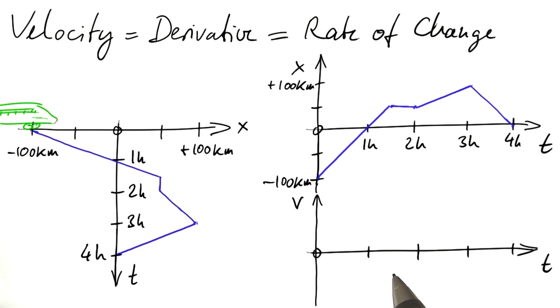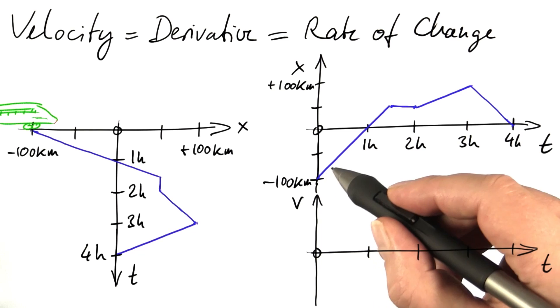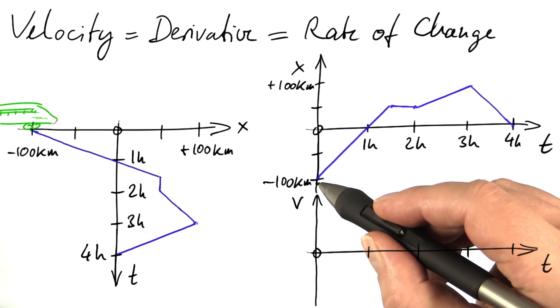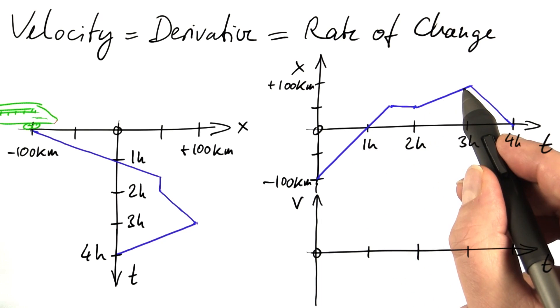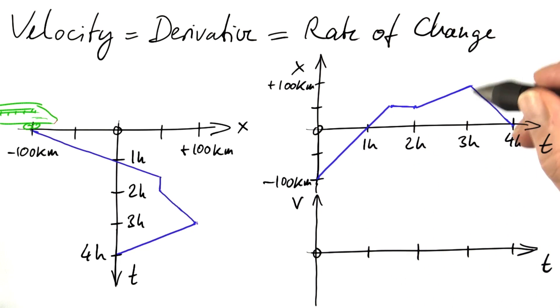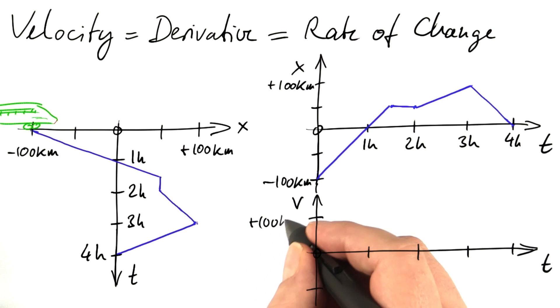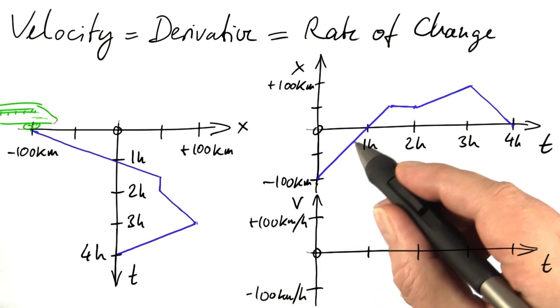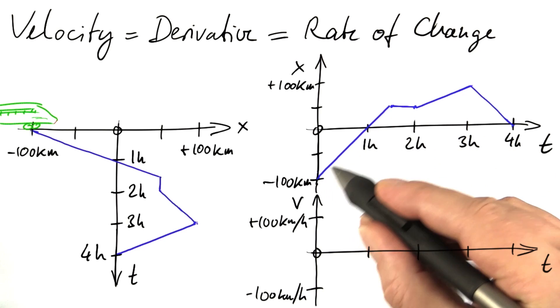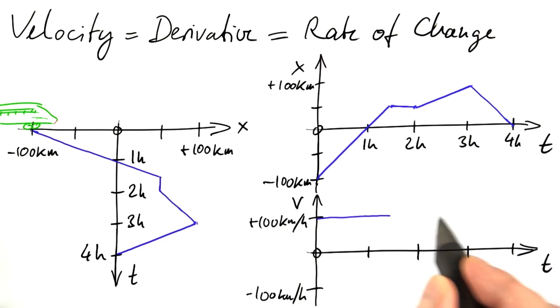Now we can create a second diagram from that that shows the velocity. So here the train advances at 100 kilometers per hour, here it's just 50 kilometers per hour. Here the train goes backward with 100 kilometers per hour, so maybe a good idea is to label this axis with plus 100 kilometers per hour and minus 100 kilometers per hour. So here we have a velocity of plus 100 kilometers per hour, here too.